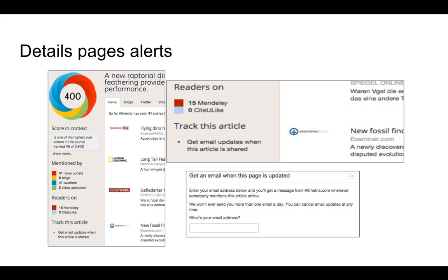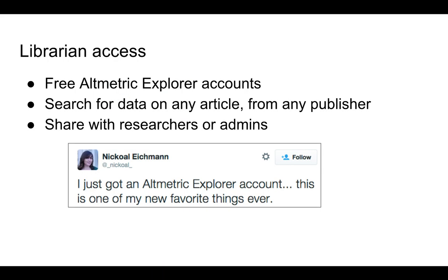By drilling down into the data, we can see that a particular paper has 15 readers on Mendeley. We can also see other data by drilling down further. Also for librarians, of particular use, there is a free altmetrics explorer account. You can search for data on any article from any publisher, and then share it with researchers and administration — a way to prompt and show them where their research has been communicated, or isn't being communicated.